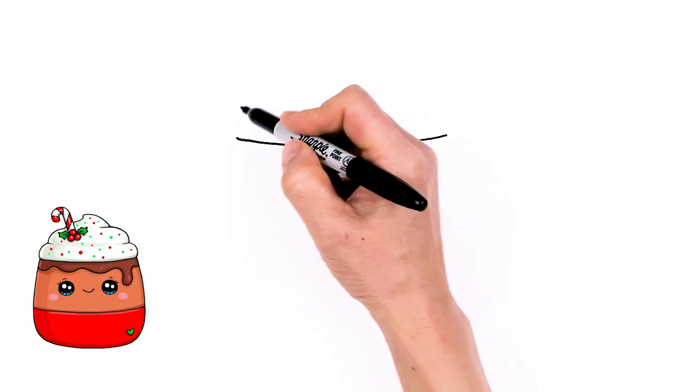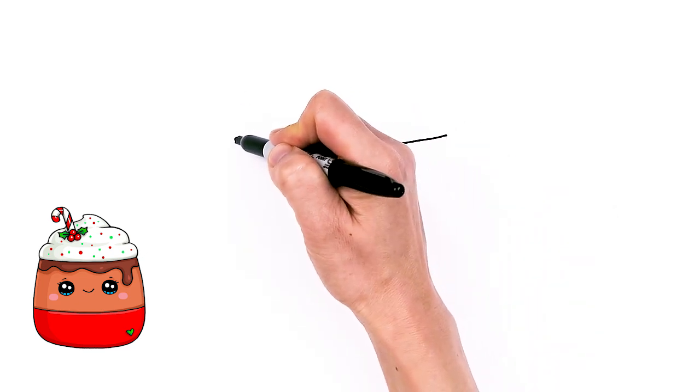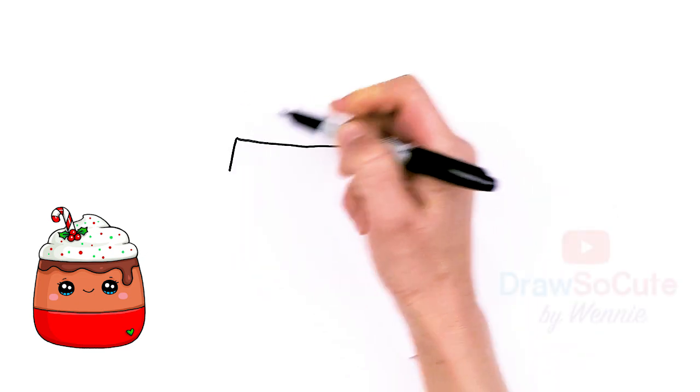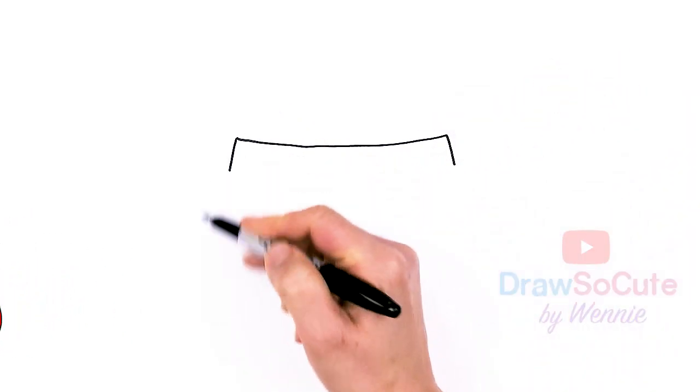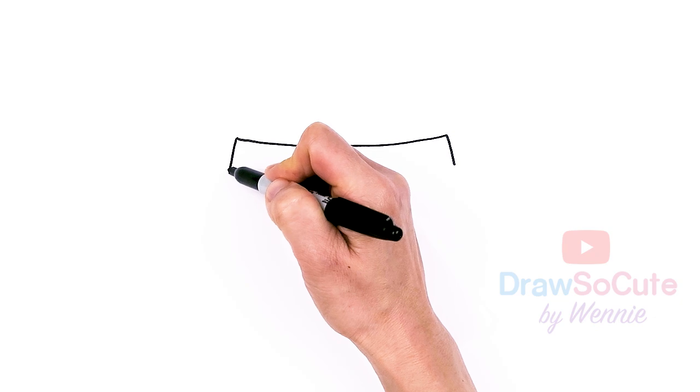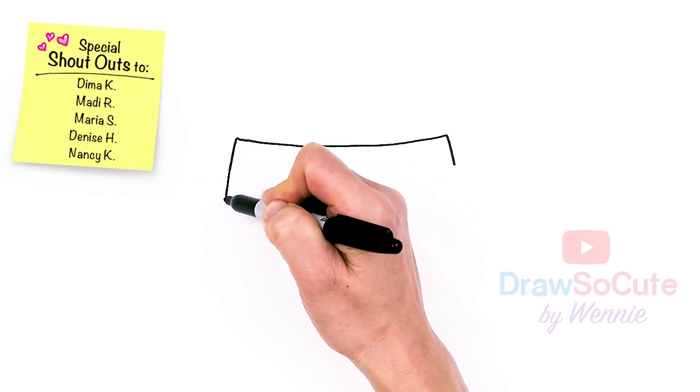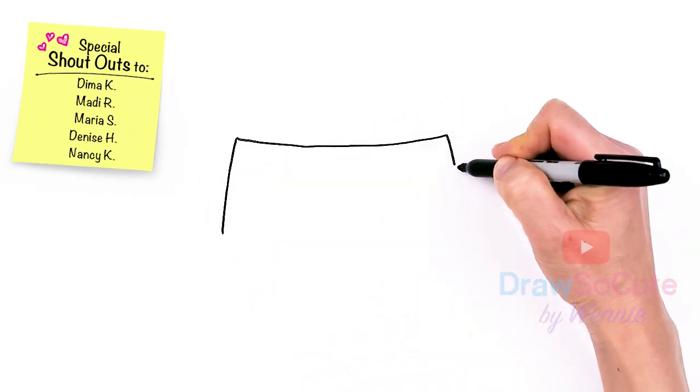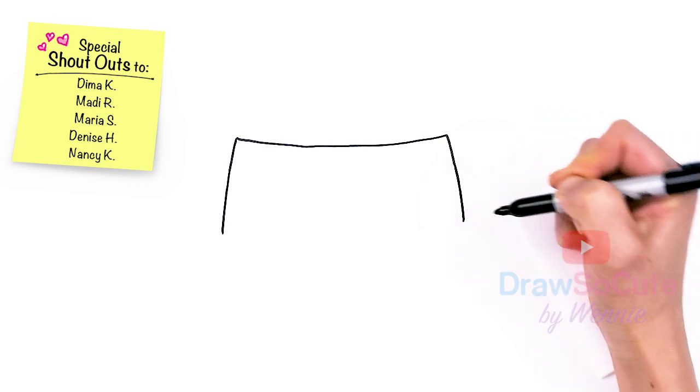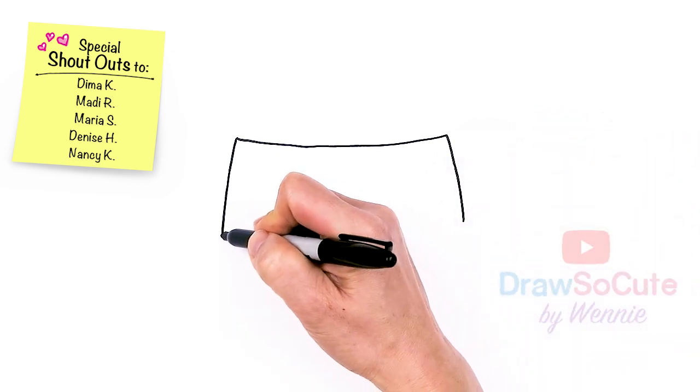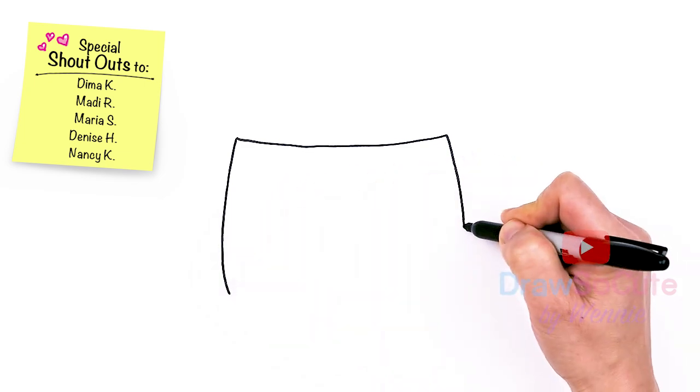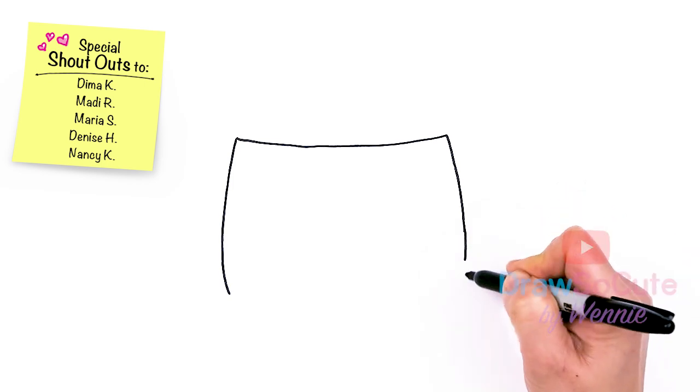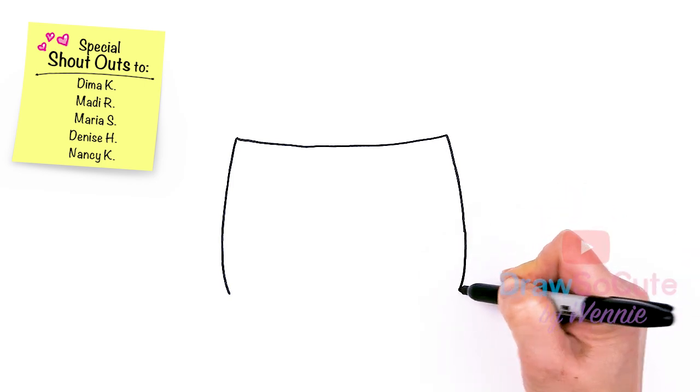So now that I have this curve right there, I'm going to come down to draw the body of our cup. Because this is a cup, it's not going to be as wide, so we're just going to bring this down and draw your usual Squishmallow shape but just a little bit straighter. So I'll bring it down and it's all up to you how tall you want to make your Squishmallow, of course, because you can squish it and make it shorter or you can stretch it out and make it taller.